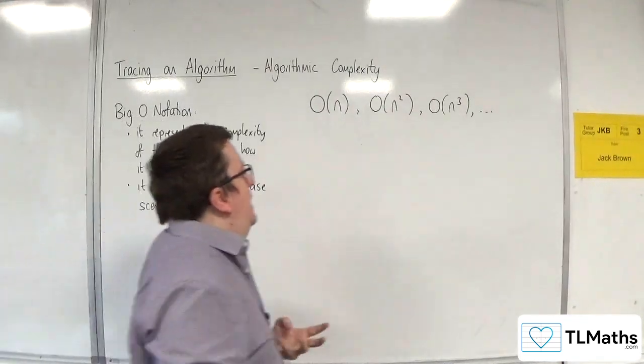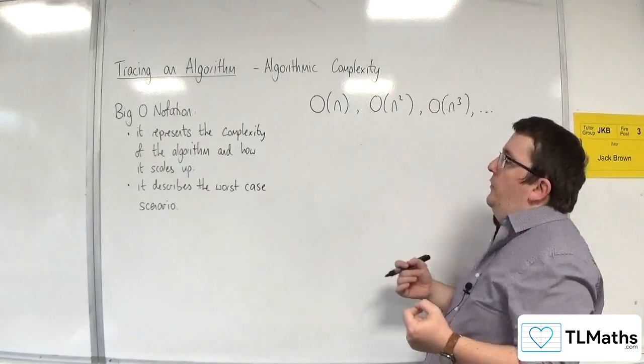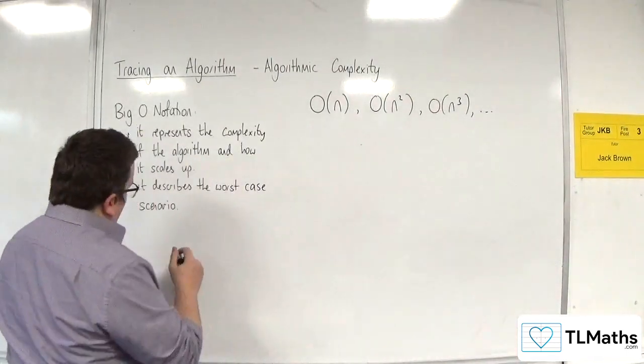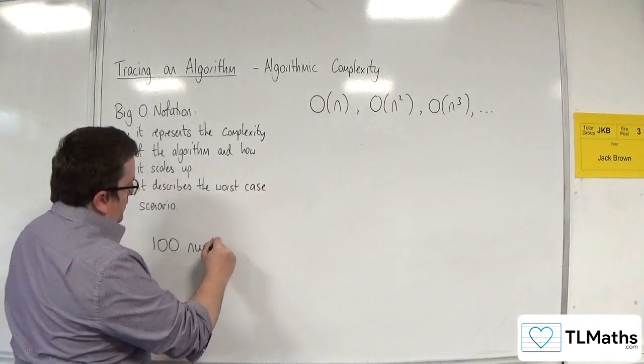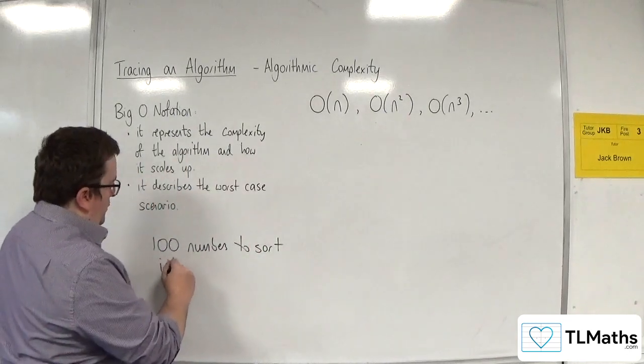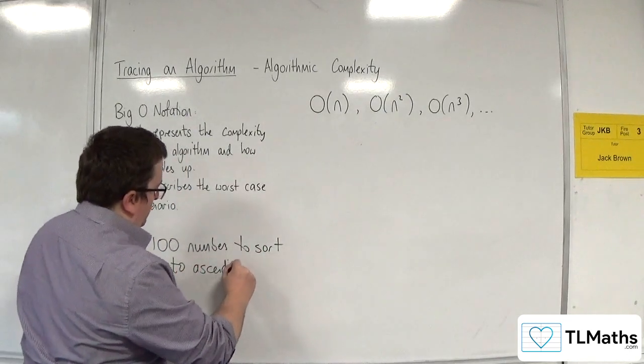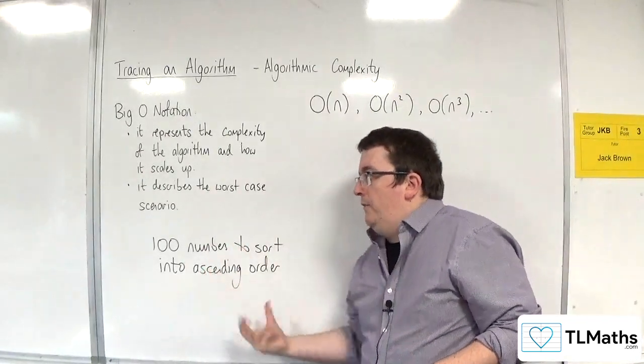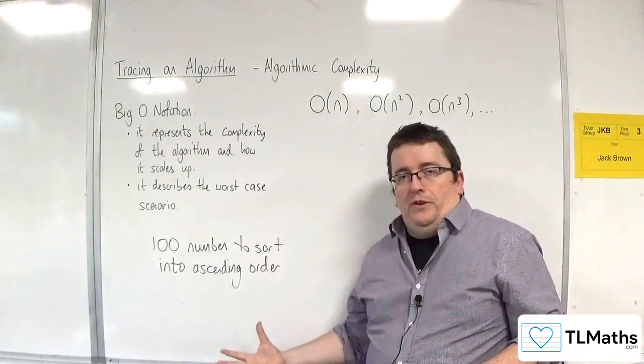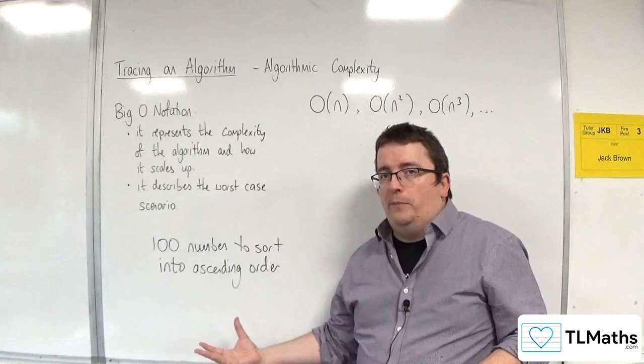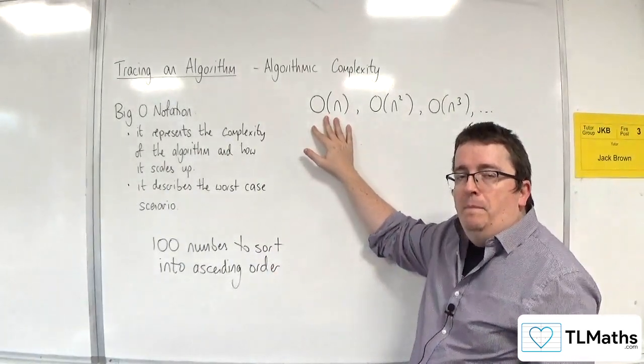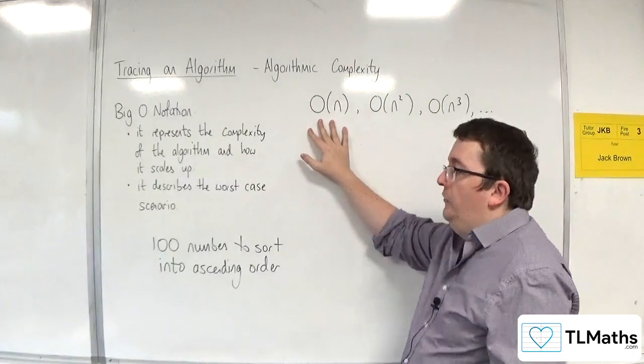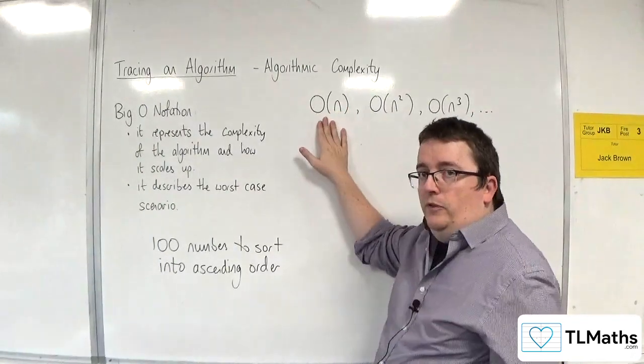So generally, what we can say is that if you've got a problem, and let's say your problem was that you had 100 numbers to sort into ascending order. Let's say you had 100 numbers, and then if you doubled it, so if you had 200 numbers instead, if the algorithm you're using is order of n, then what that means is that you would expect the problem to take twice as long. So if you double that, you would expect the time to take twice as long, or the run time.